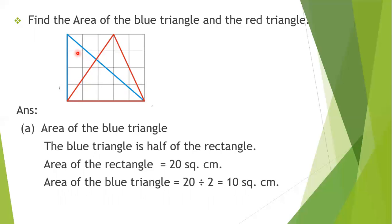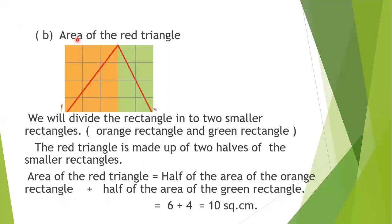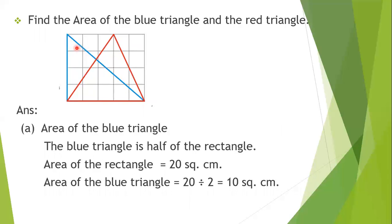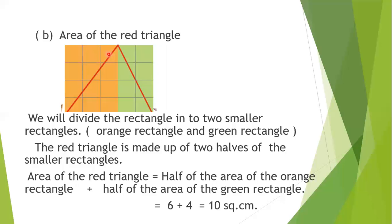Now we will find the area of the red triangle. To do this, we divide the large rectangle into two smaller rectangles. One part has a breadth of three centimeters and a length of four centimeters. So the first smaller rectangle has length four centimeters and breadth three centimeters.